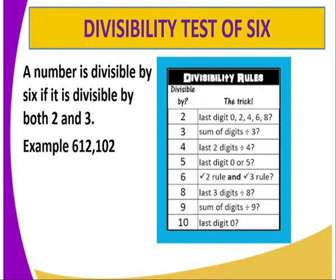We can have the following number: 612. Let us ask ourselves, is 612 divisible by 2? The answer is yes, because the last digit is an even number. Now we ask ourselves, is 612 divisible by 3? Let us get the sum of the digits: 6 plus 1 is 7, and 7 plus 2 is 9. Is 9 divisible by 3? Yes. So because 612 is divisible by both 2 and 3, it means that 612 is divisible by 6.